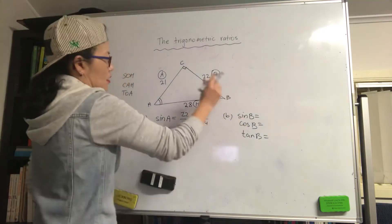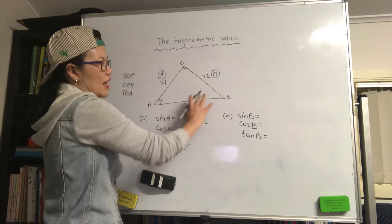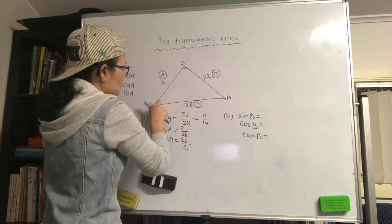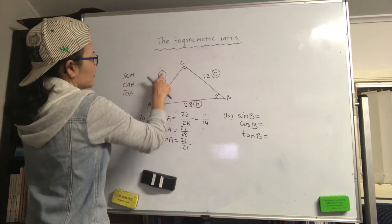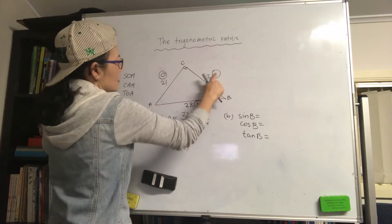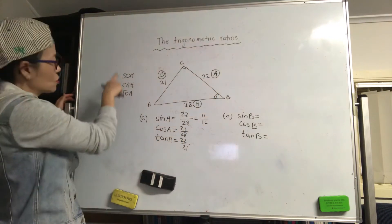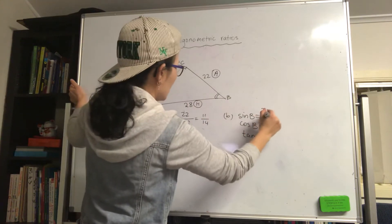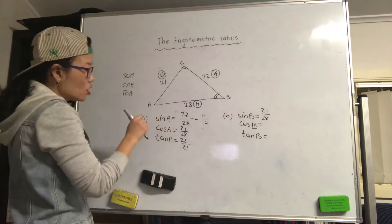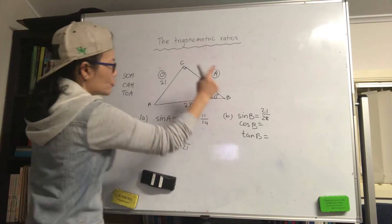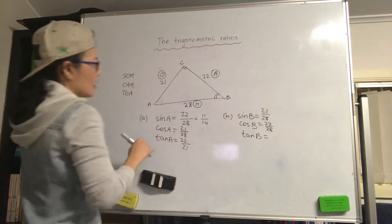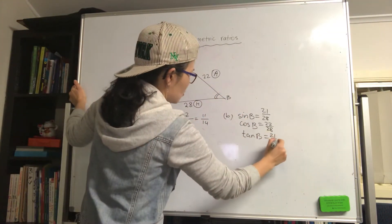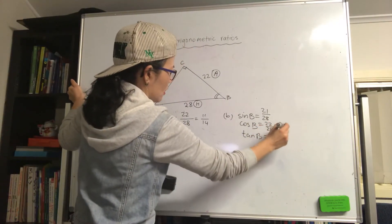Now for angle B — before jumping into SOH-CAH-TOA we need to re-label. The hypotenuse won't change, but using angle B, what was the adjacent becomes the opposite, and what was the opposite becomes the adjacent. So sine B is opposite over hypotenuse: 21 over 28. Cos B is adjacent over hypotenuse: 22 over 28. Tan B is opposite over adjacent: 21 over 22.